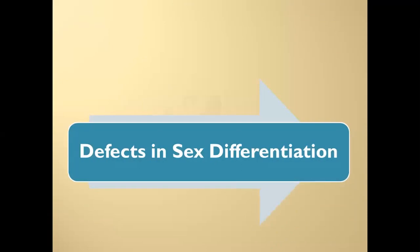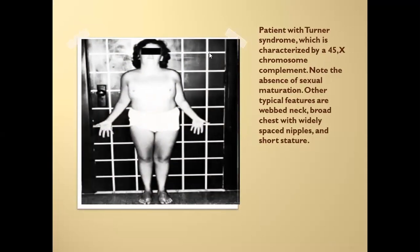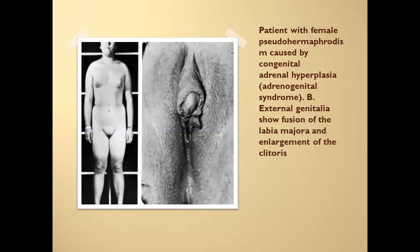Now we discuss defects in sex differentiation. Turner syndrome involves chromosomal abnormalities and presents with features including widely spaced nipples, webbed neck, and short stature. Congenital adrenal hyperplasia occurs in a 46XX female with hyperandrogenism, causing elongation of the clitoris and abnormal fusion of the labia majora.